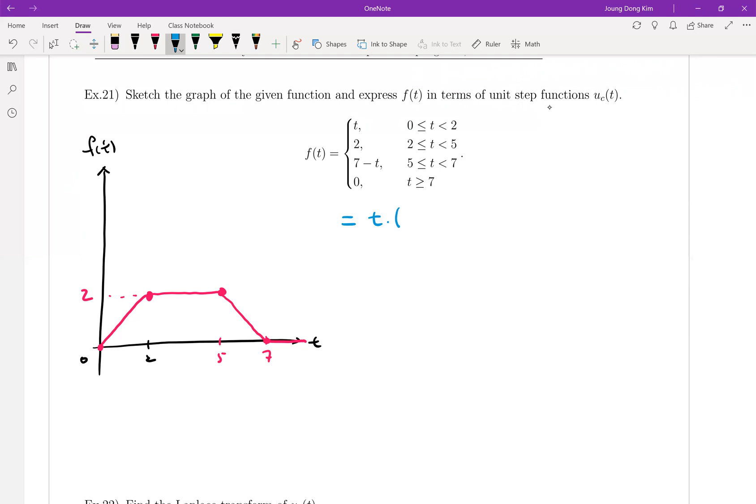T times starting point, end point, plus 2 times starting point and end point, and plus 7 minus t, starting point and end point. And the last one, 0 times U_7(t). Okay, simplify.